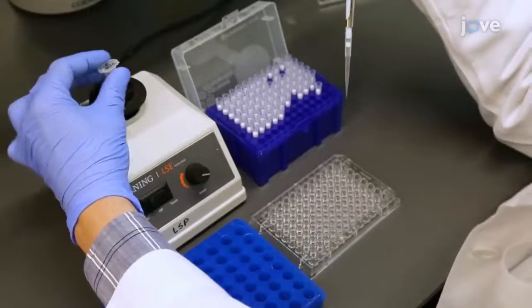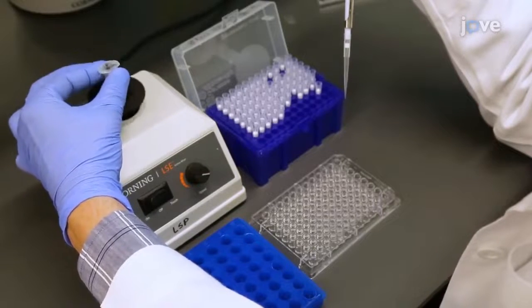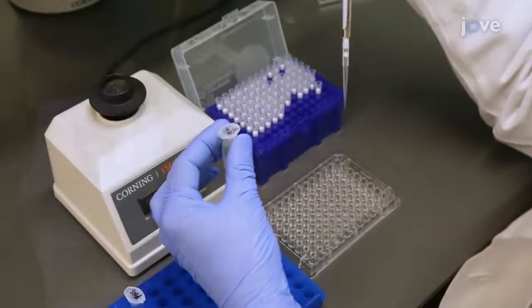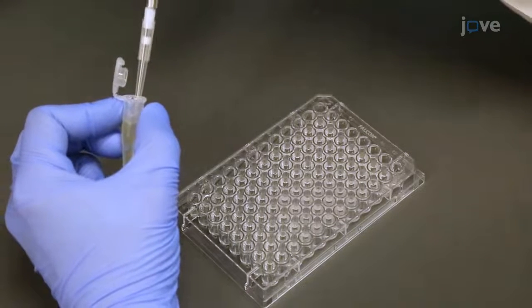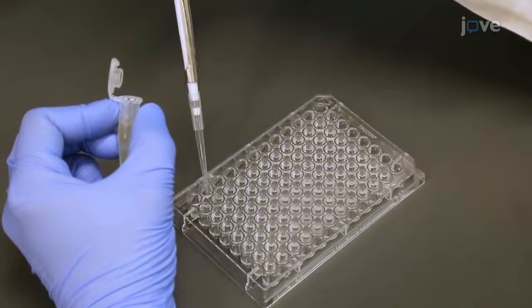Vortex the LB 10% sol for five seconds at the highest setting. Add 20 microliters of LB 10% sol to the top four rows of the wells in a 96-well microplate.